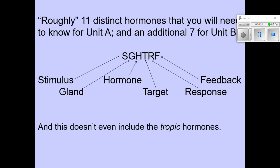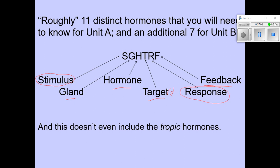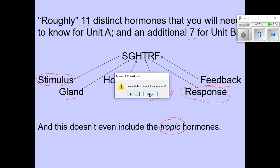The final slide is just a reminder that there is a lot of information to learn. For each one of the different hormones, you need to know: the gland that's actually producing that hormone; the target — sometimes more than one — for that specific hormone; what was the stimulus that caused the gland to release it; what is the response from the target cell, tissue, or organ; and then the feedback, typically negative feedback but sometimes positive feedback. You need to know this for about 11 hormones in the current unit and 7 more when we get to the reproductive system — and this doesn't even take into account the releasing hormones, inhibiting hormones, and tropic hormones produced by the anterior pituitary.